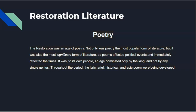The Restoration was an age of poetry. Not only was poetry the most popular form of literature, but it was also the most significant form — these poems affected political events and were often read in public. A lot of times the king would have his own personal poet. Throughout the period, the lyric, aerial, historical, and epic poem were all being developed and created, so it was a really exciting time for poetry.